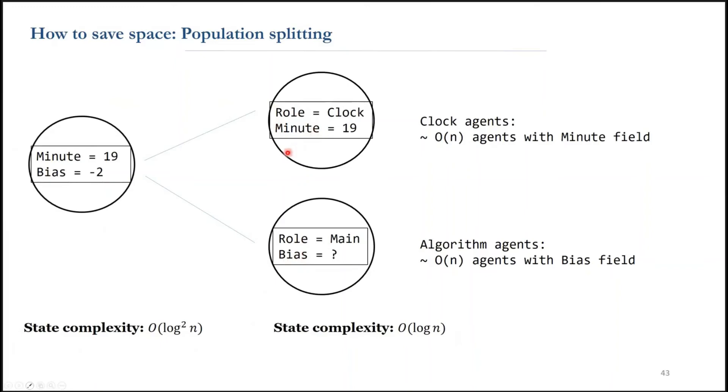One subpopulation follows the rules of the phase clock and another subpopulation are doing the cancel and split reactions for the majority protocol. So the clock agents tell the main agents the current hour and the main agents do the splitting based on that.